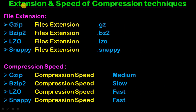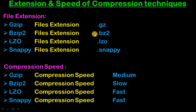Let's look at the file extension and speed of each compression technique. The Gzip file extension is .gz. The Bzip2 file extension is .bz2. The LZO file extension is .lzo. And the Snappy file extension is .snappy.